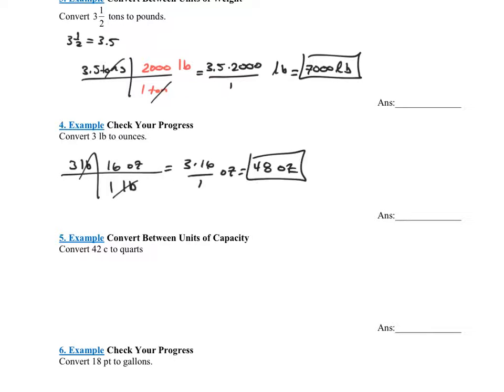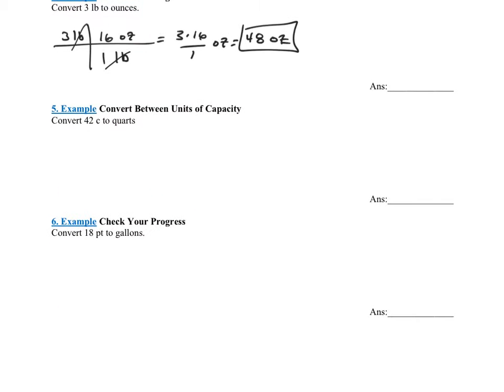How about converting cups to quarts? This is a good test problem. Start off with cups. We don't know cups to quarts directly, but we know cups to pints and then pints to quarts. I'm going to use two conversion factors here. I know that there's two cups in one pint.